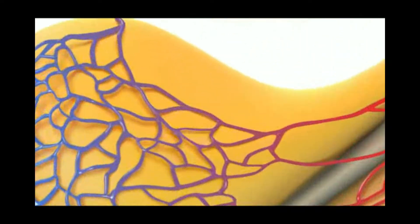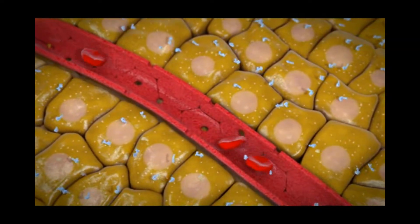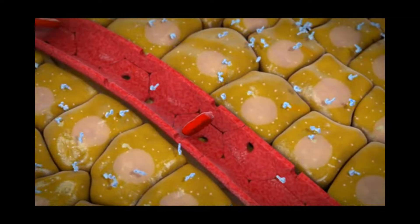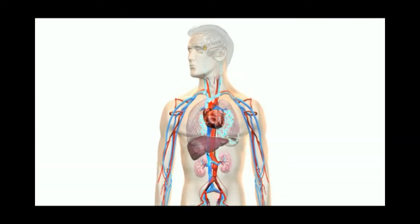Endocrine cells secrete hormones, which diffuse into nearby capillaries. The cardiovascular system transports these hormones throughout the body, affecting target cells in various tissues.